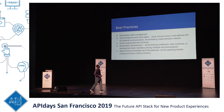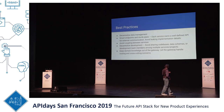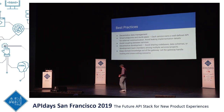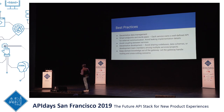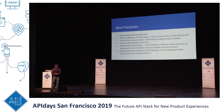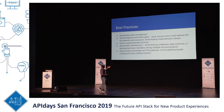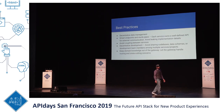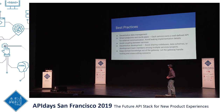Smart endpoints and dumb pipes: each service owns a well-defined API for external communication. Avoid leaking implementation details of that microservice. Each endpoint should be well-defined in how it speaks outside of itself to other microservices or third-party services. But it shouldn't be open about how that implementation works — it should be agnostic. You might change how you're doing your external communication later, so make it agnostic. That's basically the point.